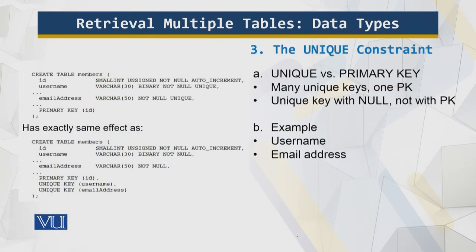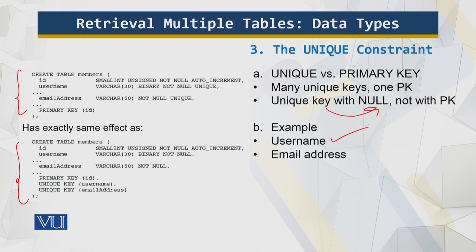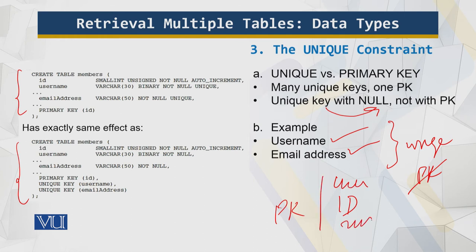The unique constraint means the contents of a column are going to be unique. However, unique is not the same as primary key — a unique key can have null values, but a primary key cannot be null. There can be multiple columns with unique values, but only one primary key column, which we use to access and retrieve data quickly. Examples of unique columns are usernames and email addresses — people are not allowed to have the same username. The primary key is typically a numeric ID, because numeric processing is fast.